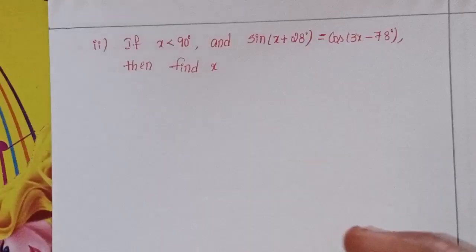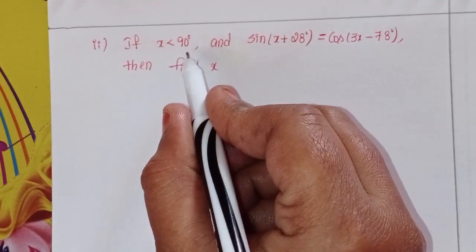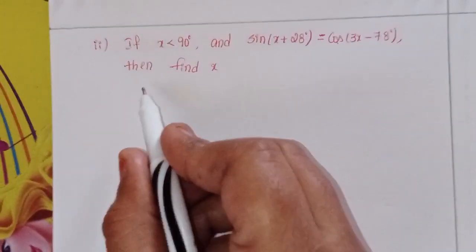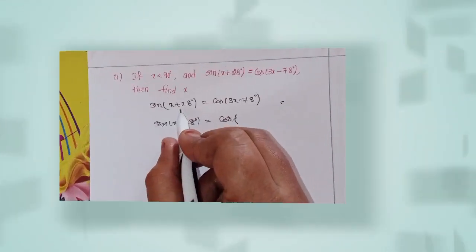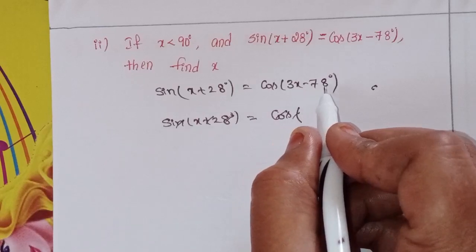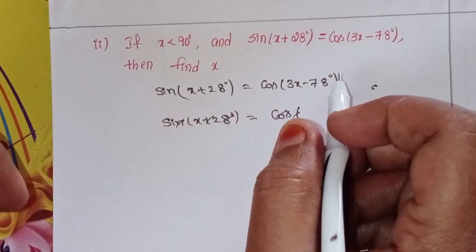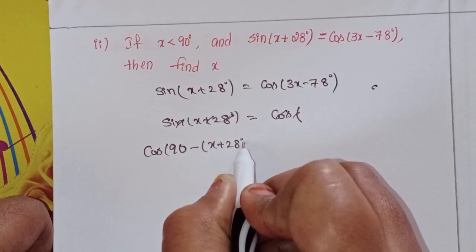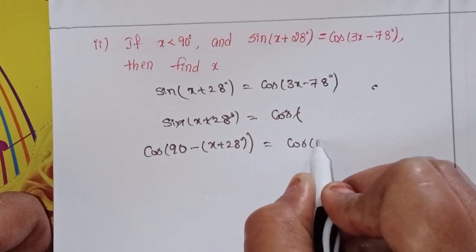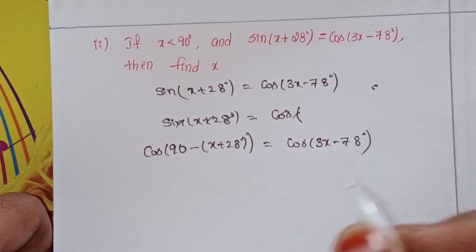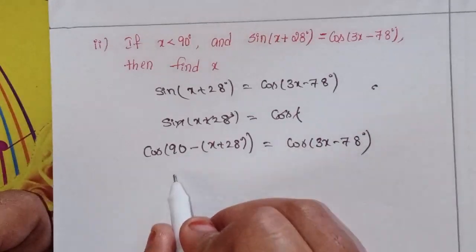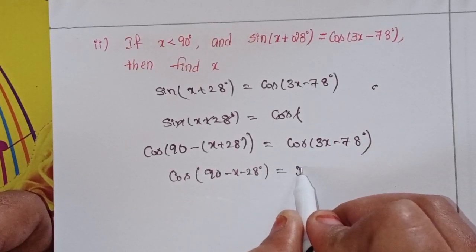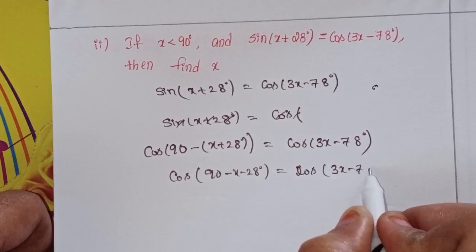Next, the second problem: if x is less than 90° (acute angle) and sin(x + 28°) = cos(3x - 78°). We can write sin θ = cos(90° - θ), so sin(x + 28°) = cos(90° - (x + 28°)) = cos(90° - x - 28°).